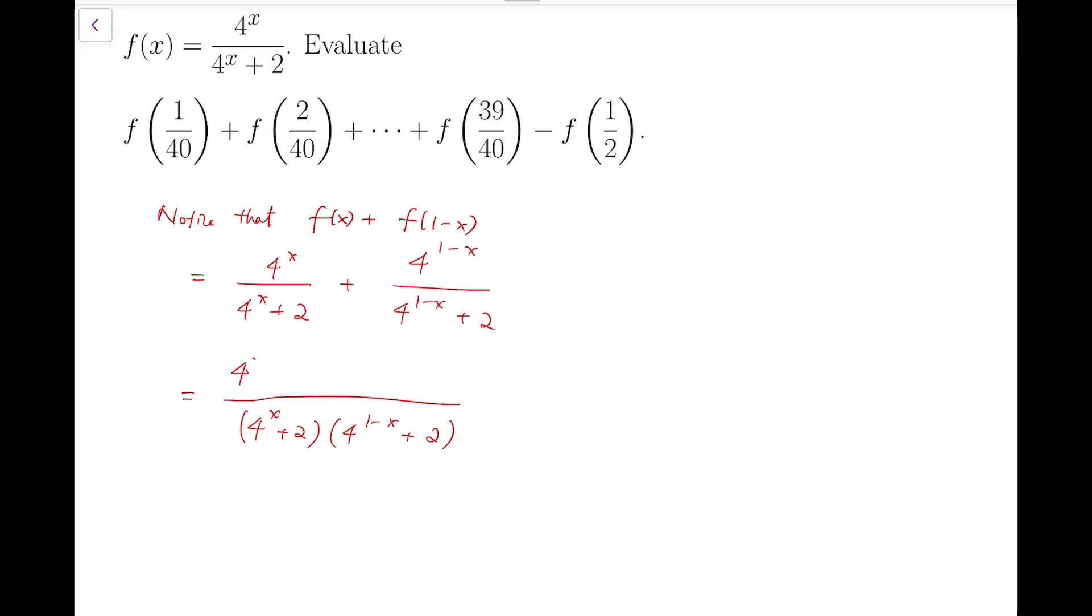And the numerator will be 4 to the x times 4 to the 1-x plus 2, plus 4 to the 1-x multiplied by 4 to the x plus 2. I expand the brackets. So, for the numerator, you will have 4 plus 2 times 4 to the x.